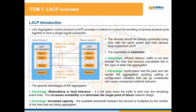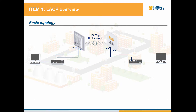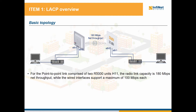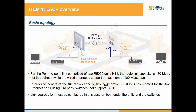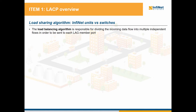For example, you'll get n times higher capacity for the connection between the two devices represented in the picture. Let's check now the basic scenario that suggests the need to implement link aggregation. A point-to-point link comprised of two air5000 Infinite units, hardware revision 11, is represented in the picture. A net throughput of 180 megabits per second is available over the air interface, but the fast ethernet ports provide a maximum speed of 100 megabits per second. In order to achieve the maximum radio throughput, link aggregation must be implemented for the ethernet segment, and we need third-party switches that have LACP capabilities. Both the switches and the Infinite units shall be configured for link aggregation.